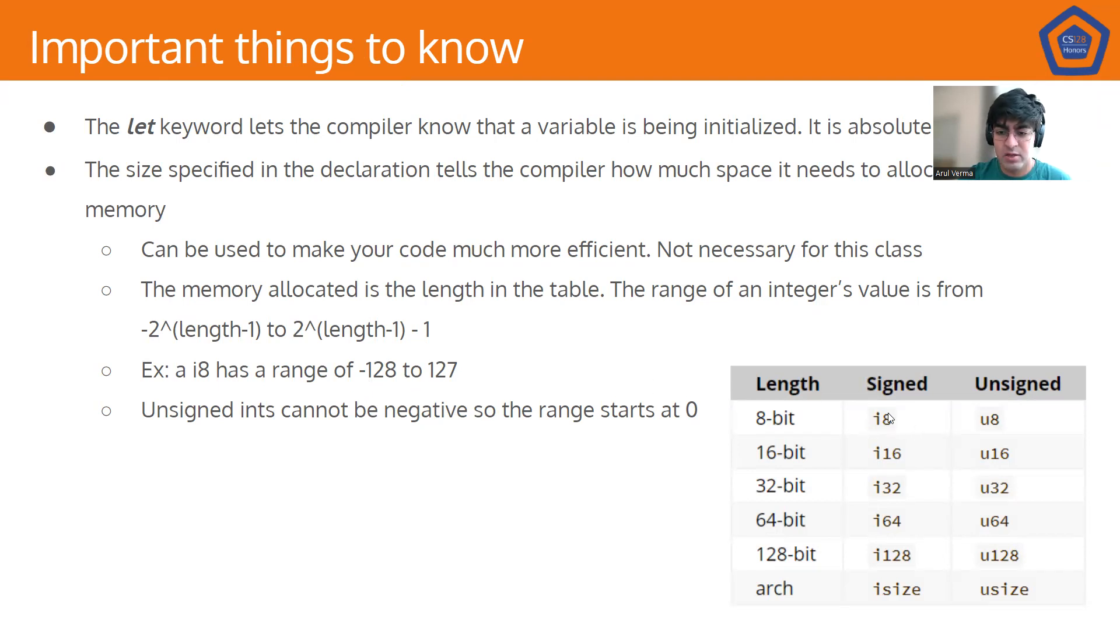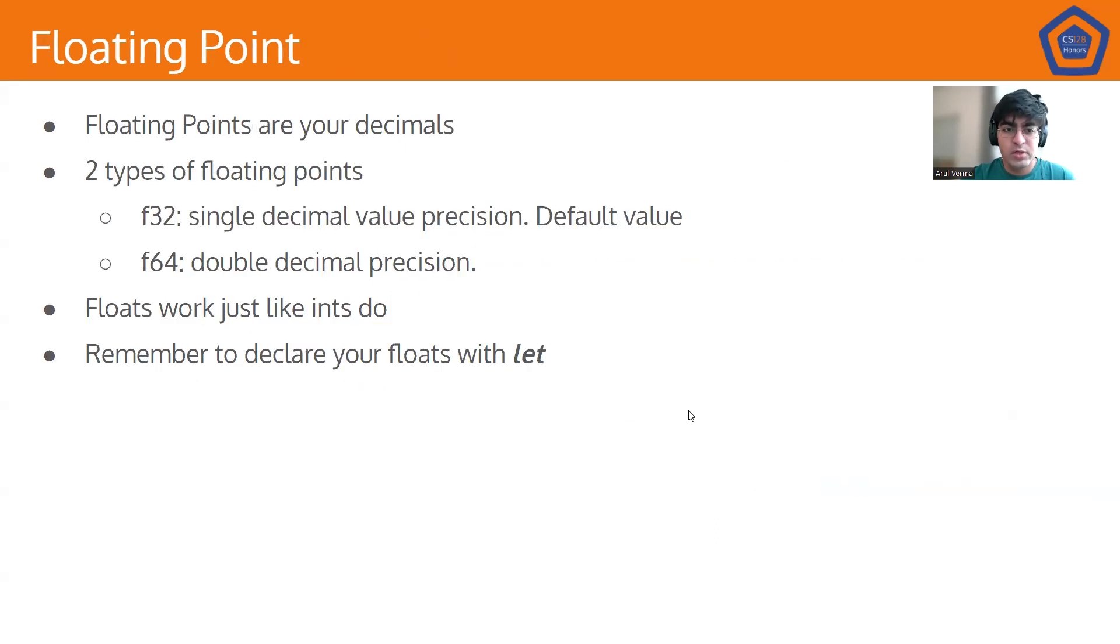For example, i8 has a range of negative 128 to 127. We can see this because negative 2 to the power of 7 is negative 128. And 2 to the power of 7 is 128 minus 1 is 127. And unsigned ints cannot be negative, so the range starts at 0.